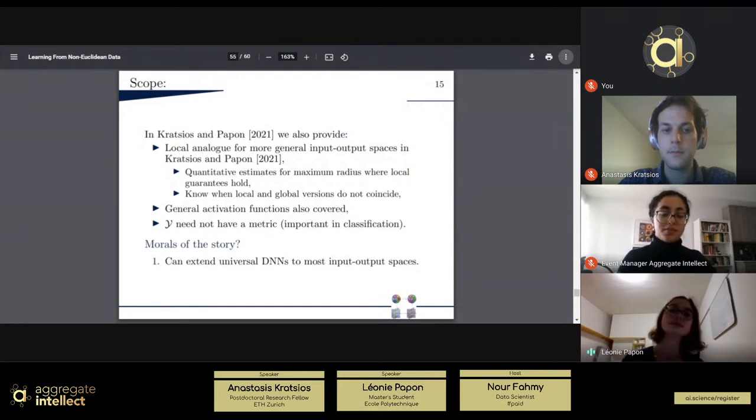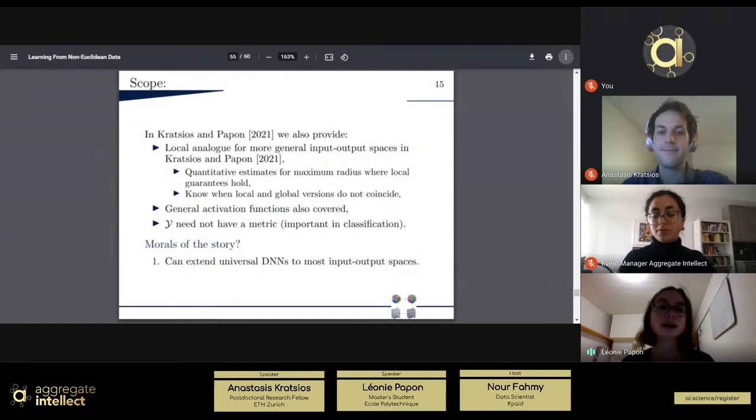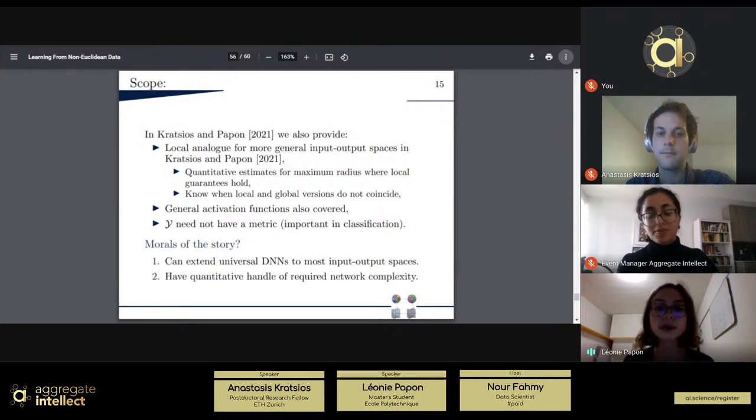So, what you should remember of this talk, global universal approximation theorem extends to deep neural networks, and to deep neural networks with very general input and output spaces. And moreover, what you should remember is that you can actually give quantitative estimates on the width and the depths of those approximating deep neural networks.